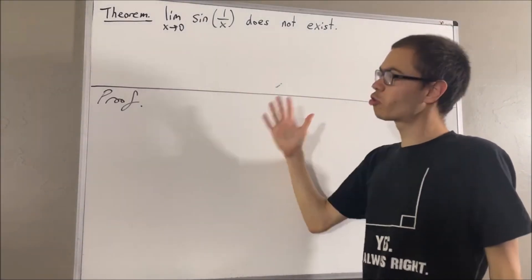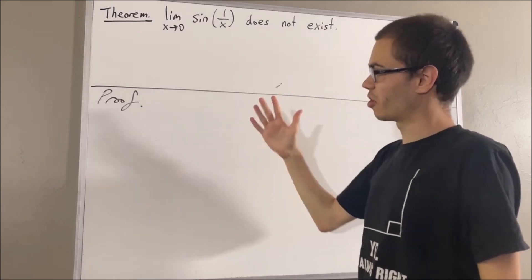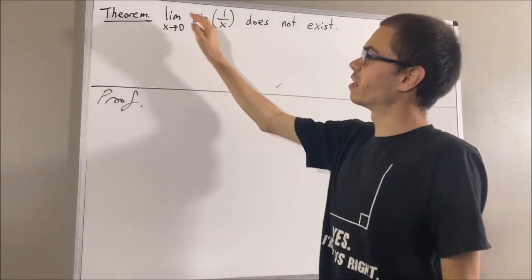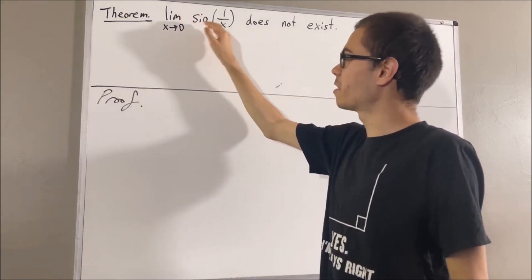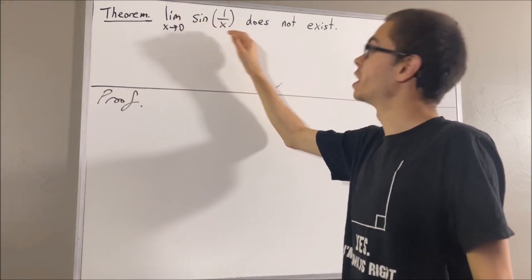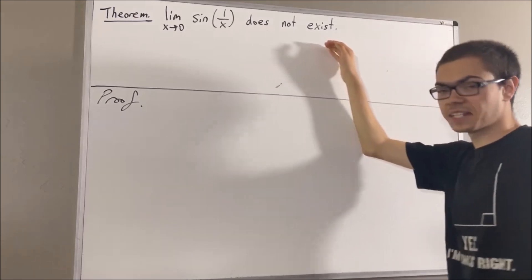In this video we are going to prove the following theorem: the limit as x approaches 0 of sine of 1 over x does not exist.